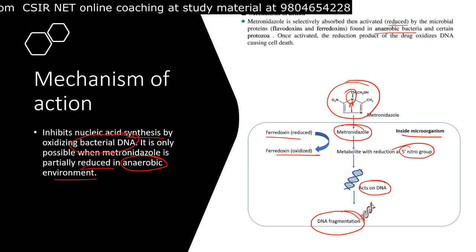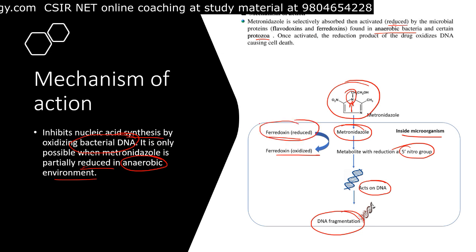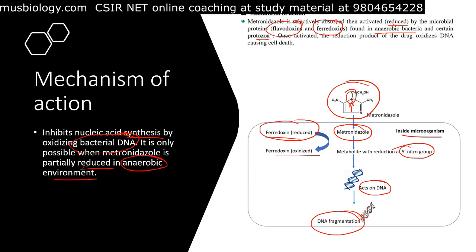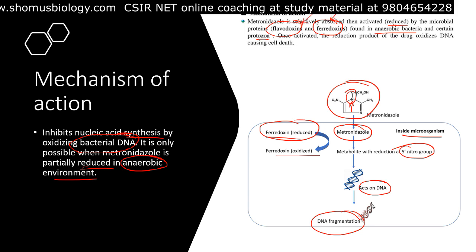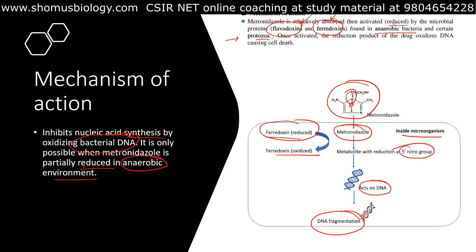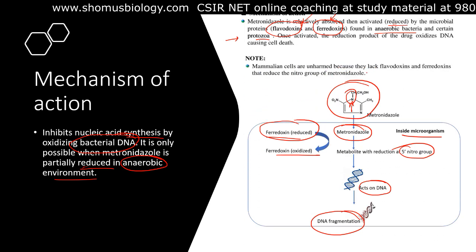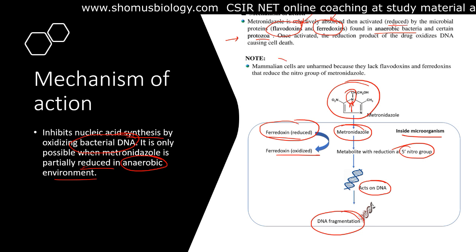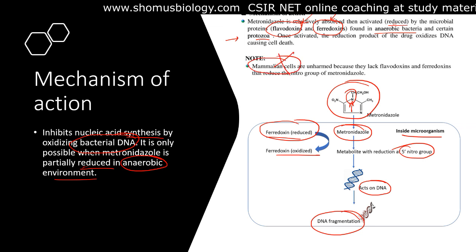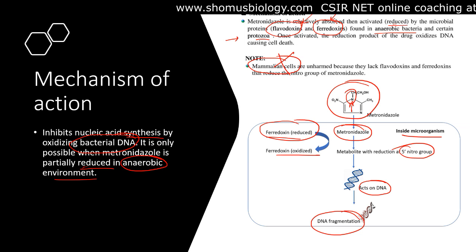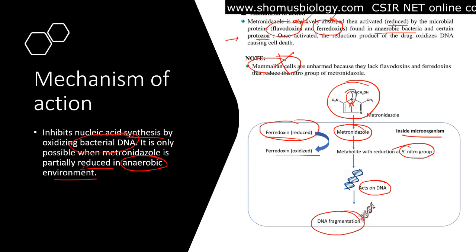Metronidazole is activated only in its reduced form, found in anaerobic bacteria and certain protozoa, because it requires ferredoxins or flavodoxins for this redox reaction. These are only found in anaerobic bacteria and certain protozoa. Since mammalian cells lack ferredoxins and flavodoxins, metronidazole will not kill mammalian cells or destroy our own DNA — it selectively destroys only bacterial and protozoal DNA.